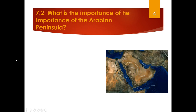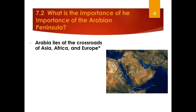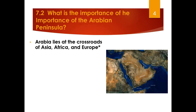Our next left-side question is: what is the importance of the Arabian Peninsula? Arabia lies at the crossroads of Asia, Africa, and Europe, so it is a transit zone for trade between all of those continents, and that makes it extremely important. Technically it's part of Asia, but it has a lot of African and European influence, and a great deal of trade passed through this region and still does.